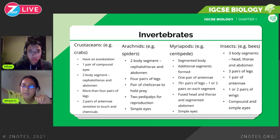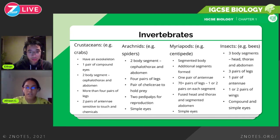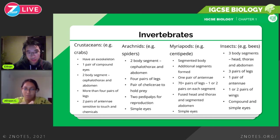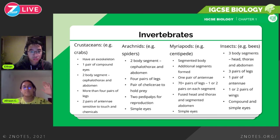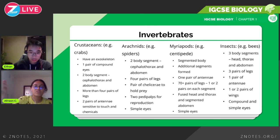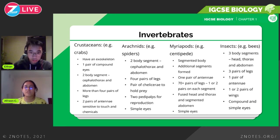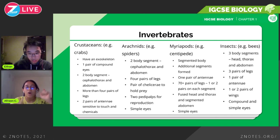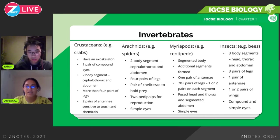Insects have three body segments: the head, the thorax, and the abdomen — different from crustaceans and arachnids which have a cephalothorax. A cephalothorax is essentially when the head and thorax are fused. Insects have three pairs of legs, one pair of antennae, one or two pairs of wings, and either compound or simple eyes depending on the species. Both types of eyes are commonly seen in insects.